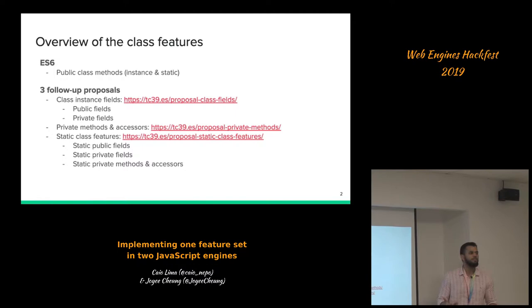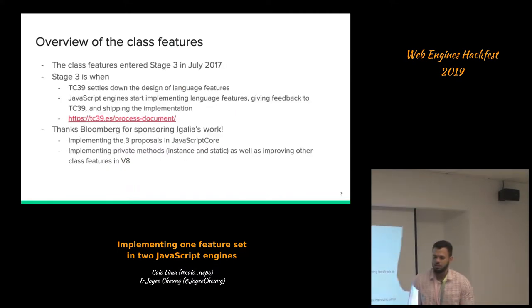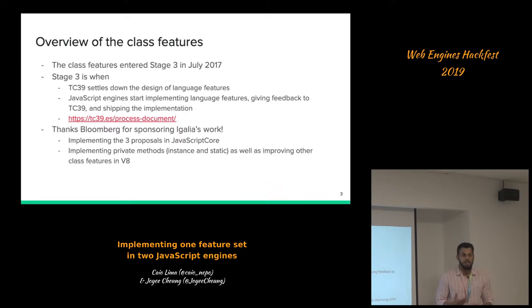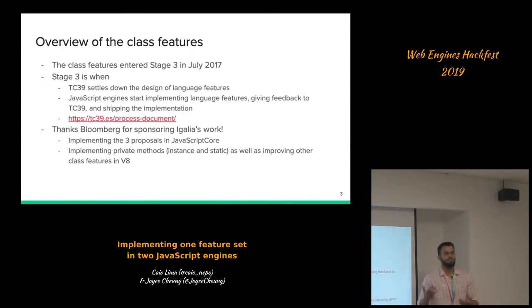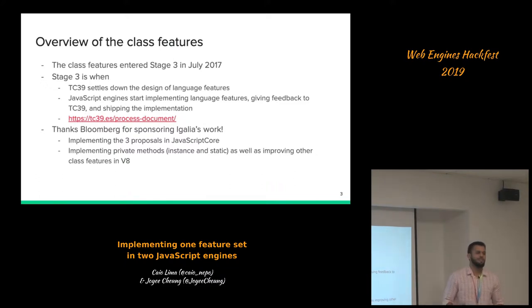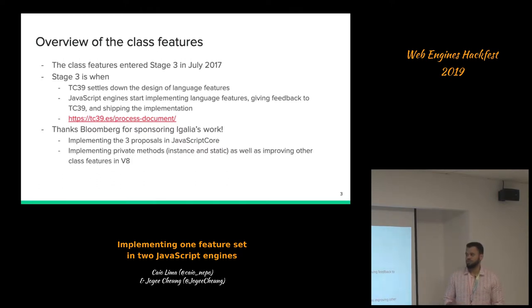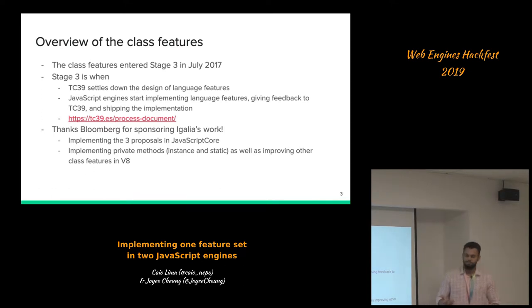That's pretty much the overview of the proposal. Right now the proposal is at stage 3. ECMA 262 has this concept of stages, and stage 3 mainly means that the TC39 committee has already decided the design of the feature. JavaScript engines are invited to start implementation and give feedback to the committee about how the spec holds up against web reality. After two implementations are shipped we are able to ask for stage 4.